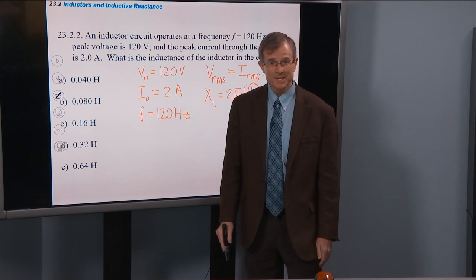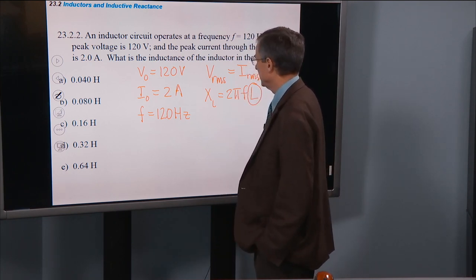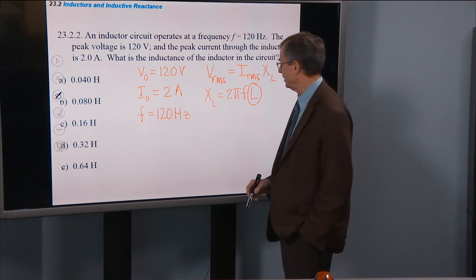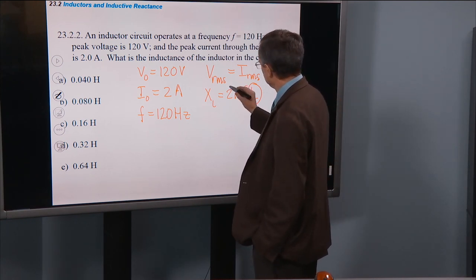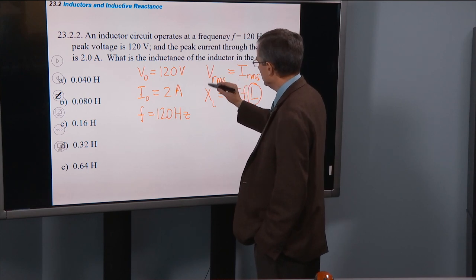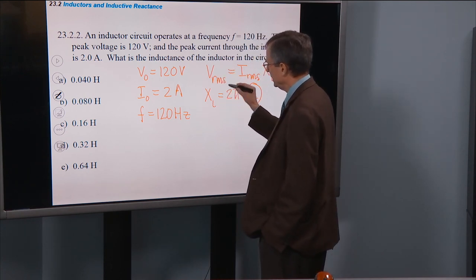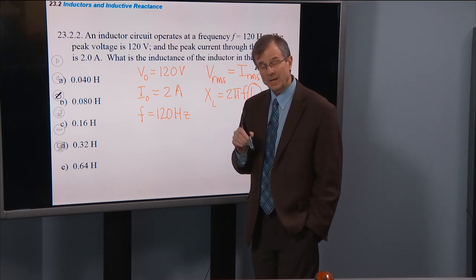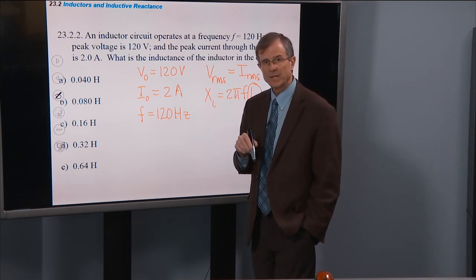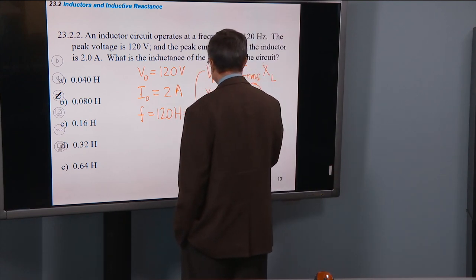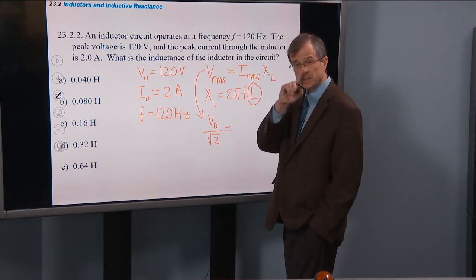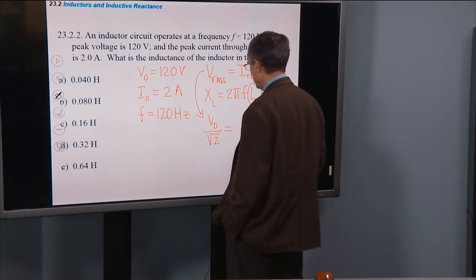And you say, well, no problem, Dr. Edwards, I can handle that. No problem at all, because I know how to relate V_RMS to V_0 and I_0. So let's actually rewrite this equation by substituting in V_RMS is V_0 divided by the square root of 2. So this equation becomes V_0 divided by the square root of 2, I_RMS is I_0 divided by the square root of 2.